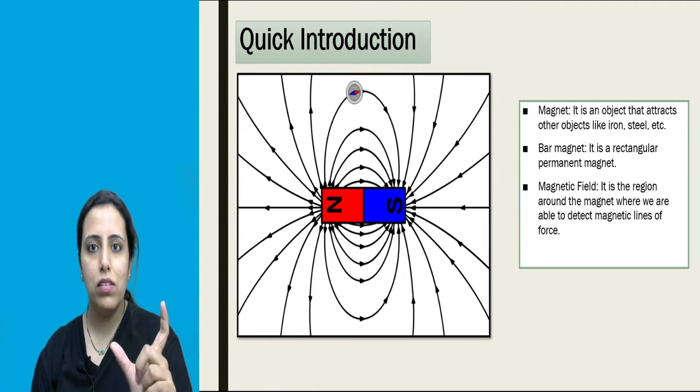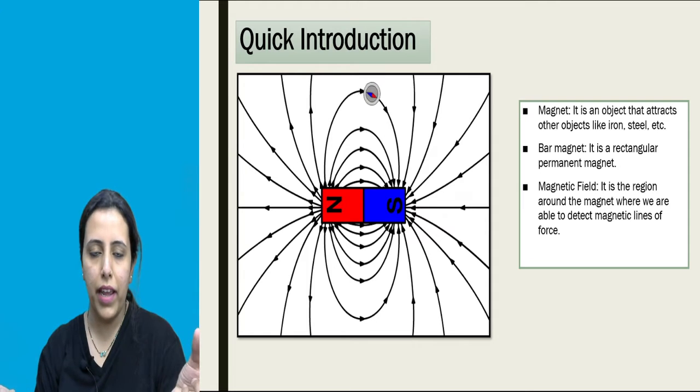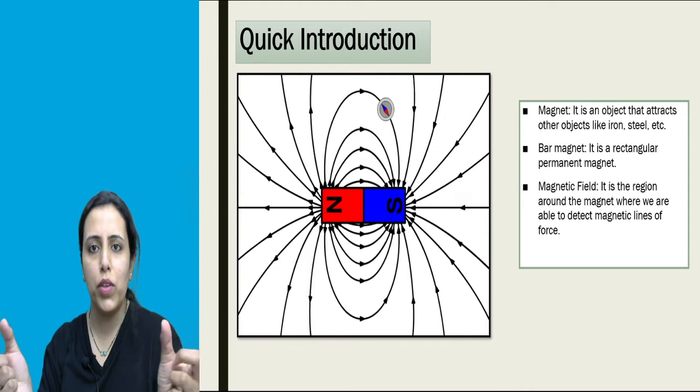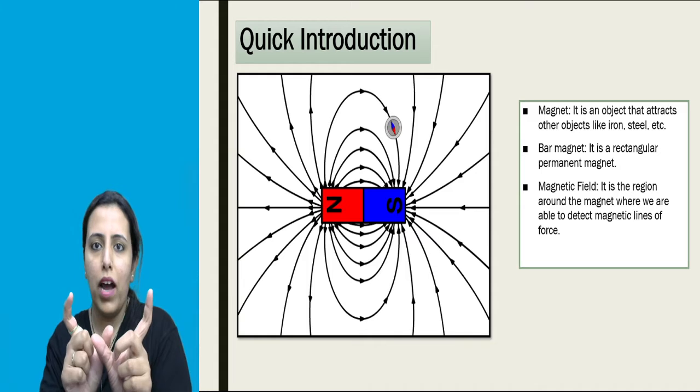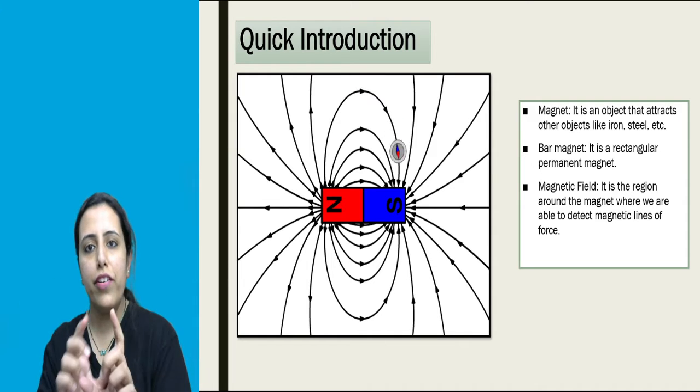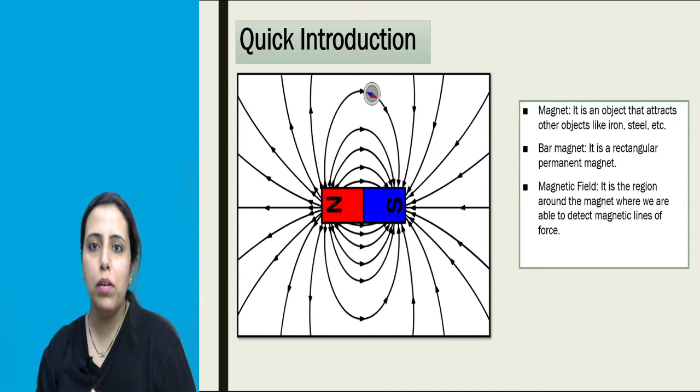And like poles, if there are like poles, they repel. This is how the basic magnetism concept is.